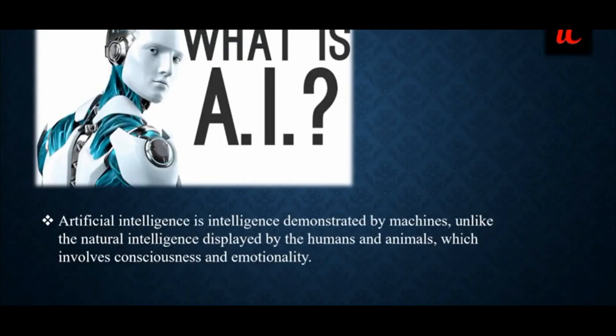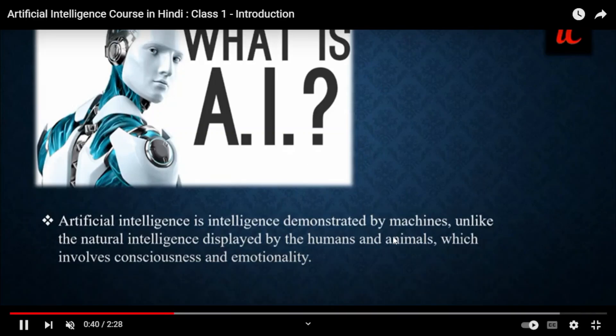So what is AI? Artificial intelligence is intelligence demonstrated by machines, unlike the natural intelligence displayed by the humans and animals. So here, what is artificial intelligence? We are not talking about the basic intelligence displayed by the humans or animals. It is intelligence that is demonstrated by the machines. So the machine will help you to create the intelligence, that is why we call it artificial intelligence.